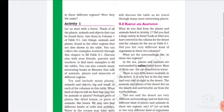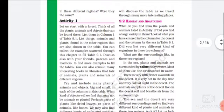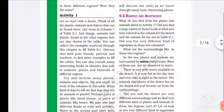Hello students, we will start our new topic, 9.2 Habitat and Adaptations. What do you find from the plants and animals listed in Activity 1? Did you find a large variety in them? Look at what you have entered in the column for the desert and the column for the sea in Table 9.1.